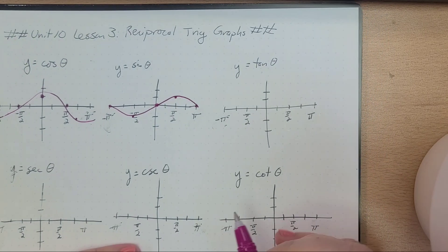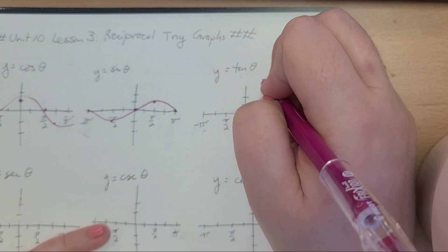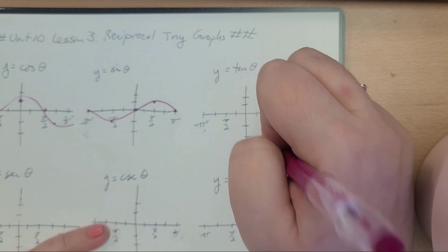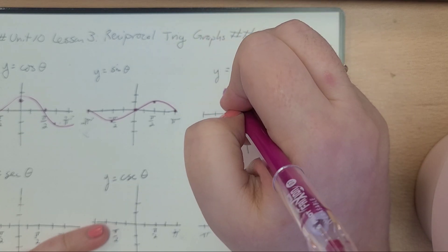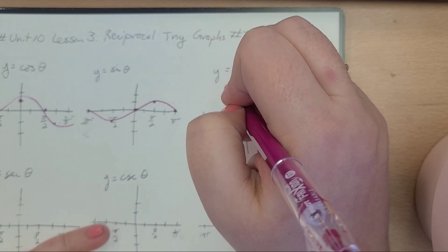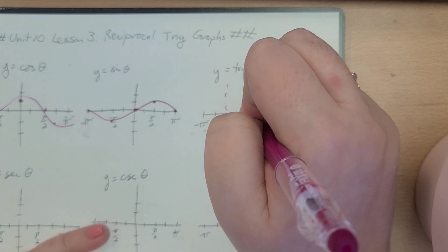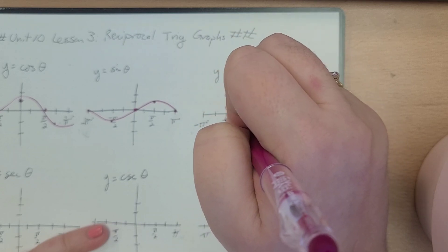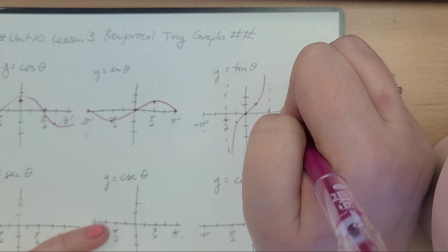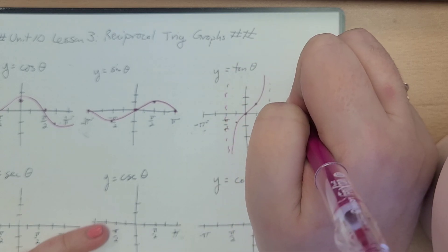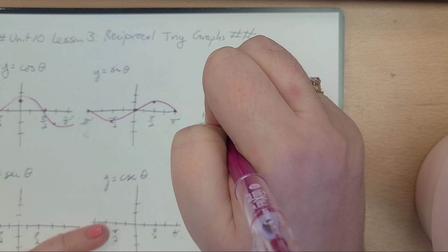And for tangent, remember those horizontal asymptotes — we've got 1 at π/2, and 1 at negative π/2. Our tangent kind of goes from up down, from right to left, so it's going to look kind of like this.